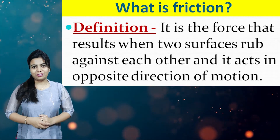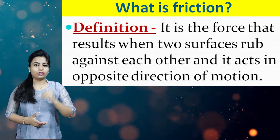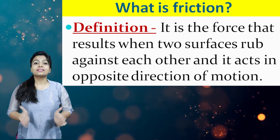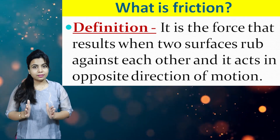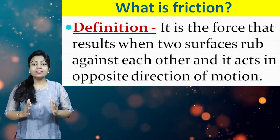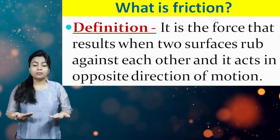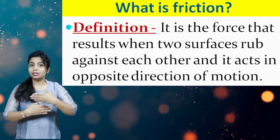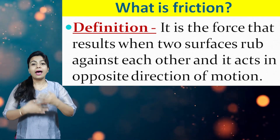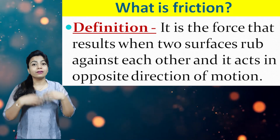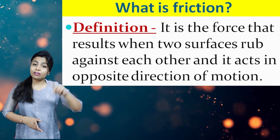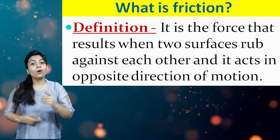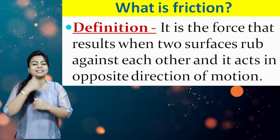Here we come with the definition of friction. Friction is a force that is being developed when two surfaces rub against each other, and due to the roughness of that surface, friction is created in the opposite direction.